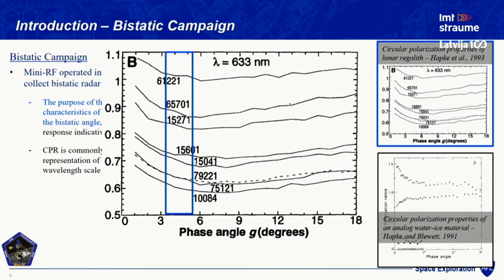I'm not going to be talking about the water ice search. Wes Patterson has recently published a paper about our search for water ice at Cabellus Crater using this method — it's in the Icarus LRO special issue. I'm going to focus instead on trying to compare these observations with radar and see if radar shows us the same sorts of behaviors.